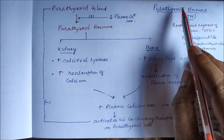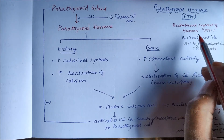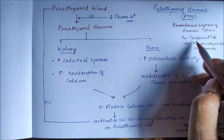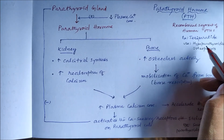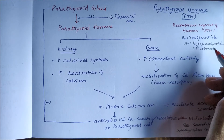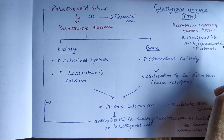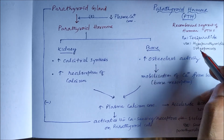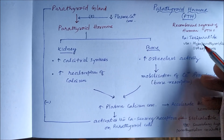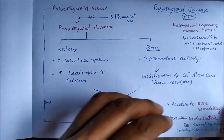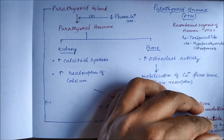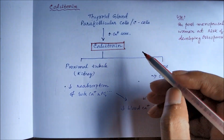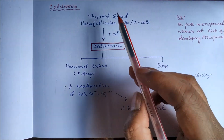The recombinant segment of human parathyroid hormone — teriparatide — is useful in cases of hypoparathyroidism and also in osteoporosis, where it helps in bone remodeling.